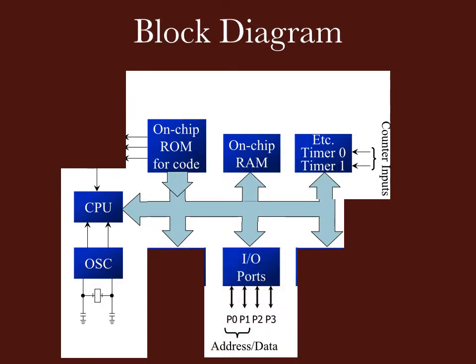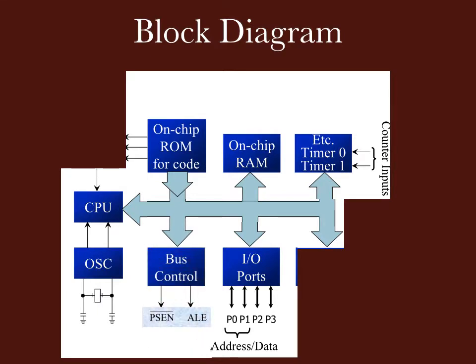The next block is I/O ports. It has four I/O ports, P0, P1, P2 and P3. And if we use external memory, then there are two I/O ports, P0 and P2, these provide the address and data bus. When the external memory is connected to it, the control signals are generated from the control block. The signals are PSEN and ALE. We will discuss these signals when we discuss the pin diagram in the next video.